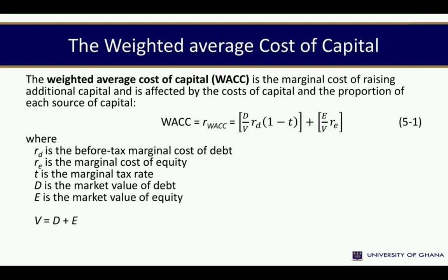When we put everything together, the use of debt and equity usually comes with what we refer to as the weighted average cost of capital. This is the marginal cost of raising additional capital, and it is affected by the cost of the various modes of capital and the proportion of each source. It works similarly to the portfolio return model — the average return on the portfolio of capital is a function of the proportion of debt over the total value of the business multiplied by the expected return or cost of each capital component.